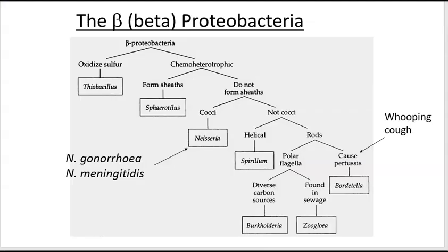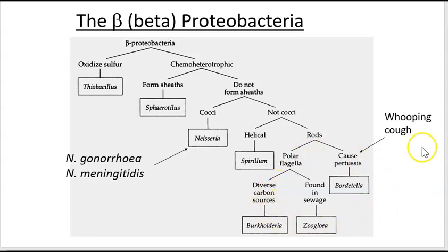The beta proteobacteria are also gram-negative. Some are found in soil and water. The Neisseria group can cause gonorrhea or meningitis, and this group also includes the bacterium that causes whooping cough. This is just a subset of beta proteobacteria shown in the dichotomous key, illustrating the diversity of organisms that probably had a common ancestor and then diversified for different environments.